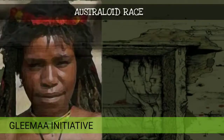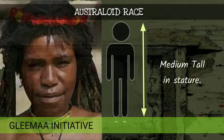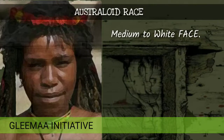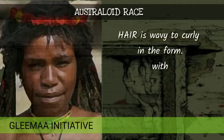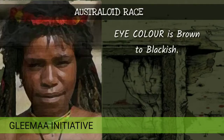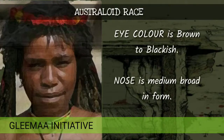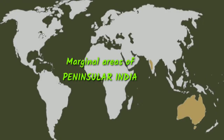Lastly, the Australoid race: dark brown and black skin color, medium tall in stature, medium to wide face, head form is broad to medium with medium height, hair is wavy to curly with brown to dark brown color, eye color is brown to blackish, nose is medium broad in form. They are found in marginal areas of peninsular India and Australia.